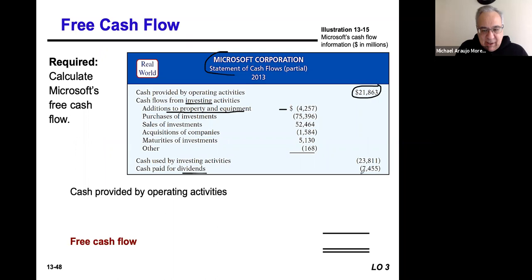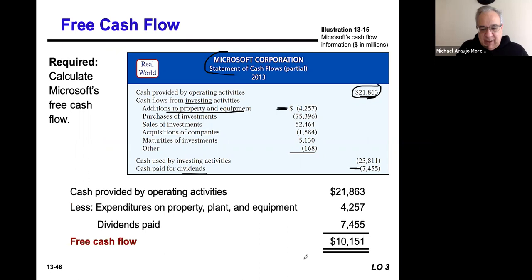We also subtract out dividends. Here we can see that Microsoft paid $7,455 in dividends. So the starting point — cash provided by operating activities — minus capital expenditures, minus dividends, gives us the free cash flow. Putting it all together, our free cash flow is $10,151.